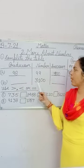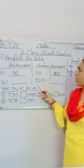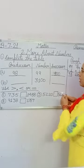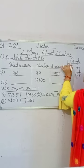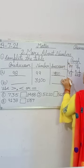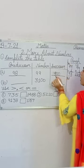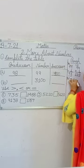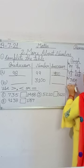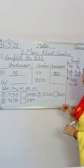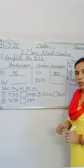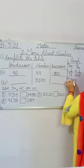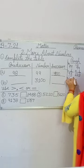Now in part B, you have given 3100. For the predecessor number, we subtract 1. Now 0 minus 1 is impossible, so regrouping starts.